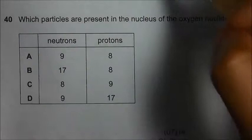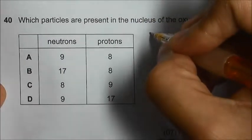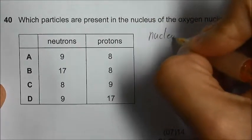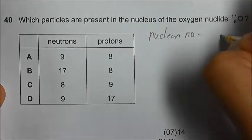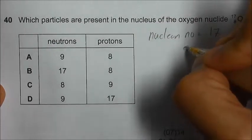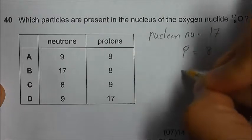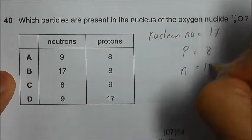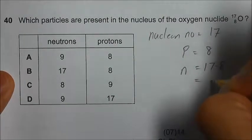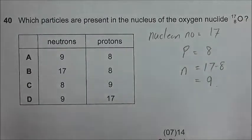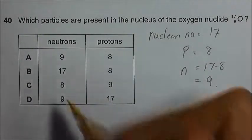In oxygen nuclei, we see that the nucleon number is equal to 18 and proton number is equal to 8. That means the number of neutrons is 17 minus 8 is equal to 9. So the answer should be A.